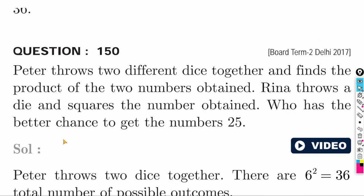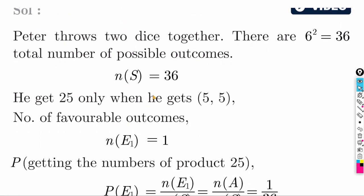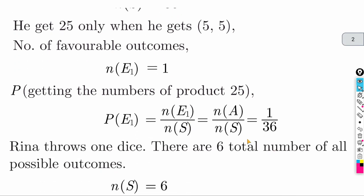Next question: Peter throws two different dice and records the product. Rina throws one die and records the square of the number. Who has a better chance of getting the number 25? 25 comes from 5 × 5. For two dice, the probability is 1 by 36.